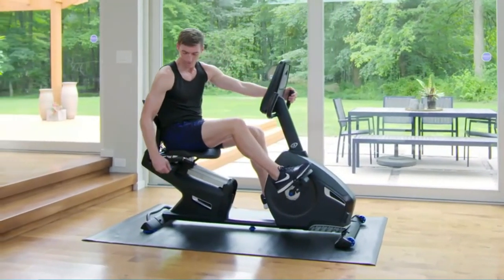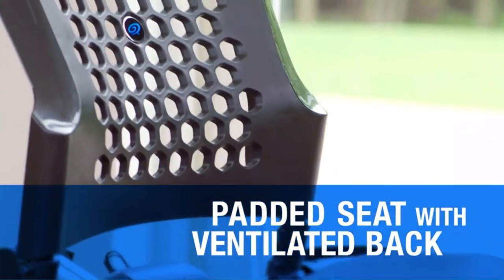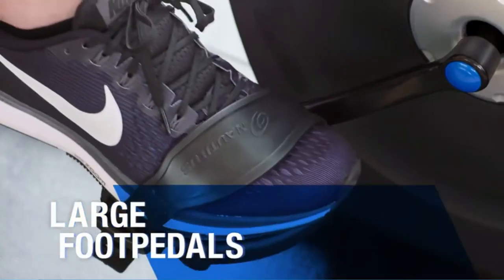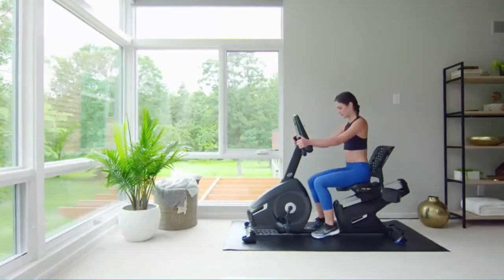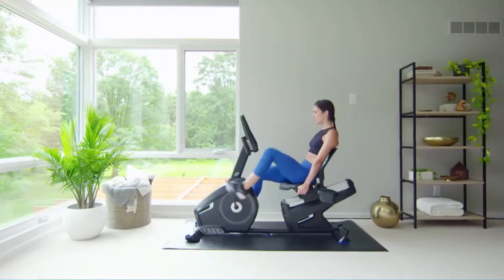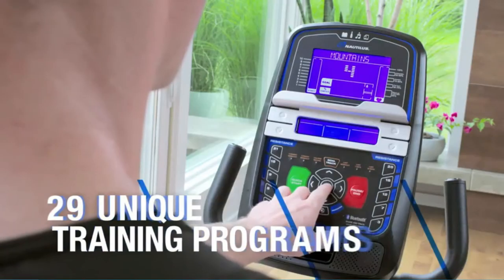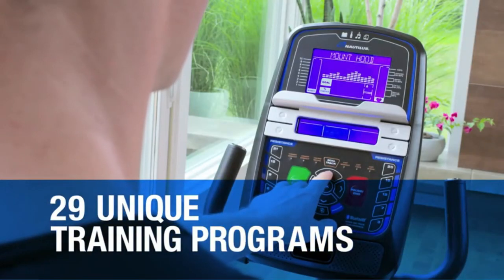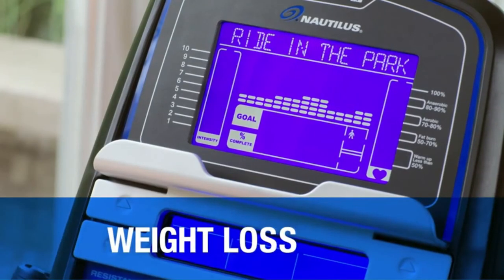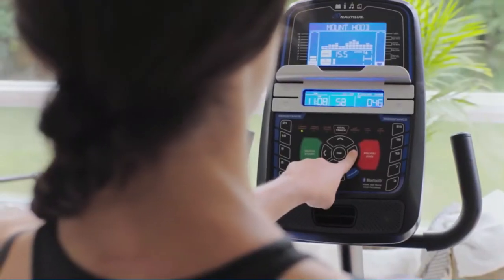Seniors do not have to be tech-savvy to get the most out of the Nautilus R616. While there are many great features on the bike, they are all designed to be as intuitive and user-friendly as possible. Connect your smartphone to the bike using either Bluetooth or a port and listen to your favorite music or audiobook while you work out. Use the bright LCD screen to choose from 25 levels of resistance or 29 workout instructions.